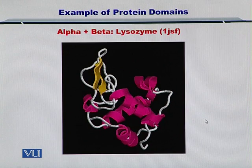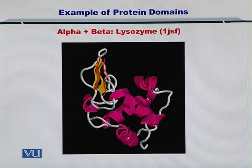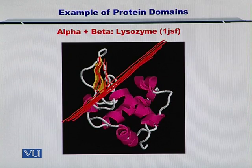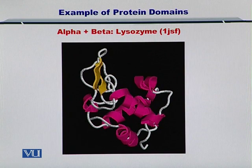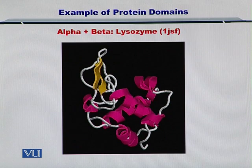Next is the alpha plus beta domain. In this case, we have lysozyme as an example. You can see there are beta sheets isolated on one side and alpha helices shown on the other side. This is simple to remember: there is a clear separation of beta sheets and alpha helices, which is different from alpha over beta where they were mixed together in the architecture.